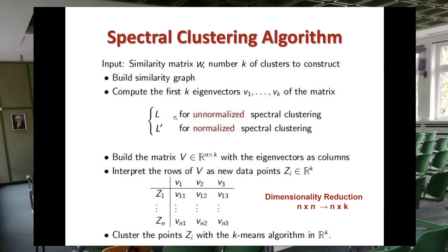You can apply this to the unnormalized or normalized version of the Laplacian — there are actually many ways to run spectral clustering. When you change the function that you want to minimize, like in this case the normalized cut, you have a different problem and need a different algorithm. There are many variations of these problems. Then we build the matrix V of size n by k, where n is the number of points and k is the number of eigenvectors or clusters we think exist in the data set.